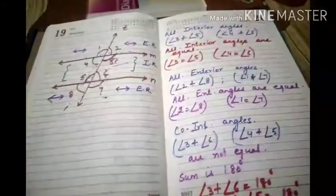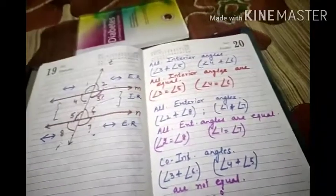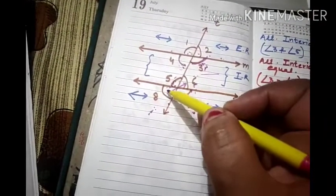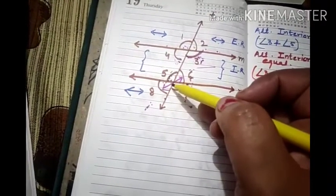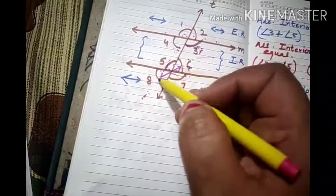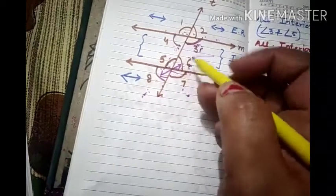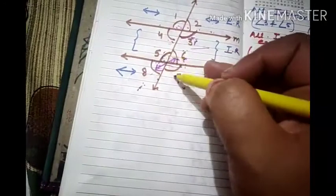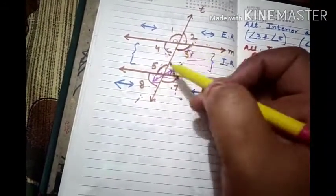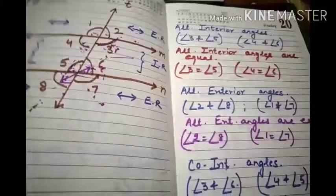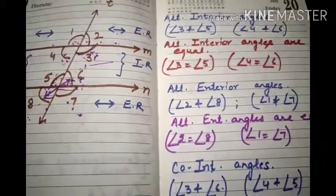Vertically opposite angles are equal. I have told you that vertically opposite angles have no common arm. So angles 6 and 8 are vertically opposite angles and are equal.